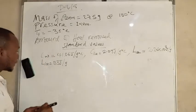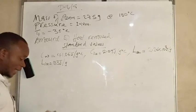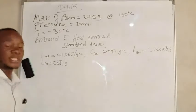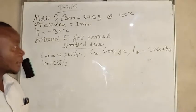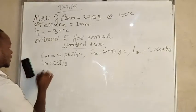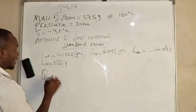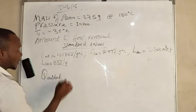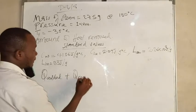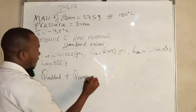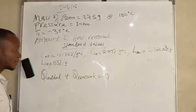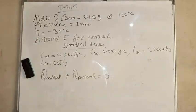The energy that must be added and the energy that must be removed must be equal according to the conservation of energy principle. The conservation of energy states that the energy that must be added plus the energy that must be removed must be equal to zero.